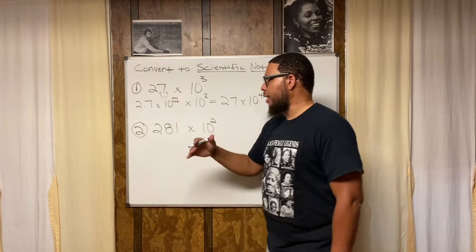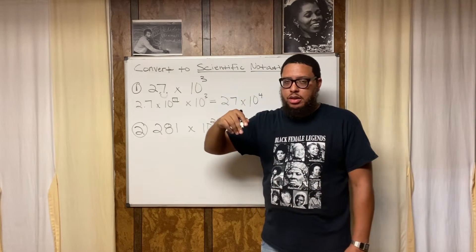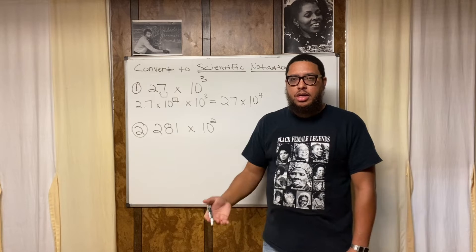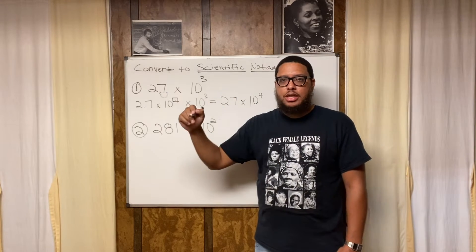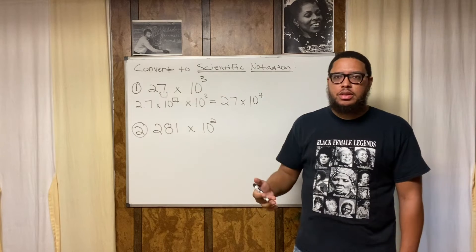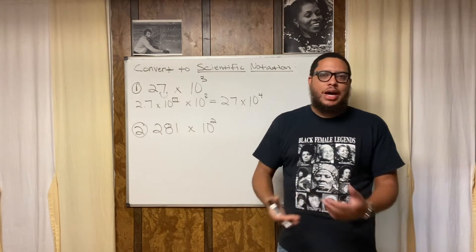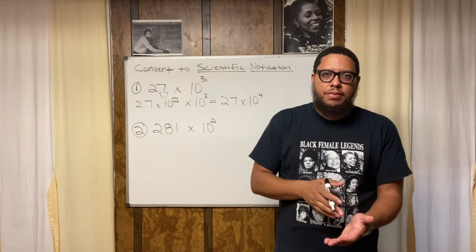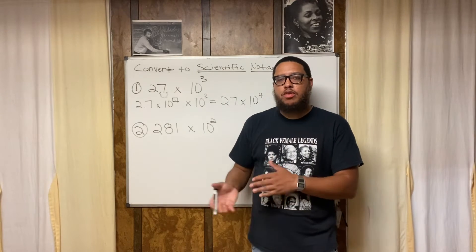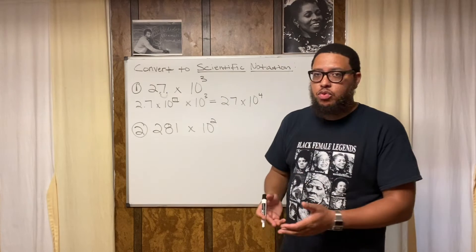Now we need to use the multiplication rule for exponents from Algebra 1. The multiplication rule says that when you have bases that are the same and they're being multiplied, you write the base one time and add their exponents. So 10 to the first times 10 to the third — those are equivalent bases — so you add 1 plus 3 to get 4. That gives you 2.7 times 10 to the fourth. Just like in Algebra 1, x times x to the third equals x to the fourth. Some textbooks call it the product rule or product property — same idea applies here with scientific notation.